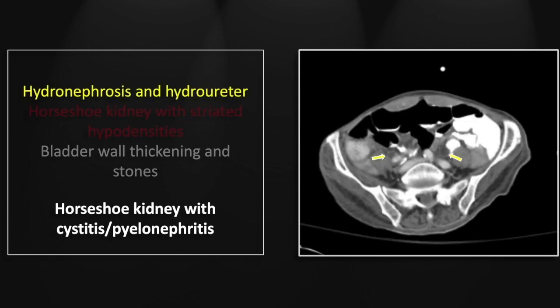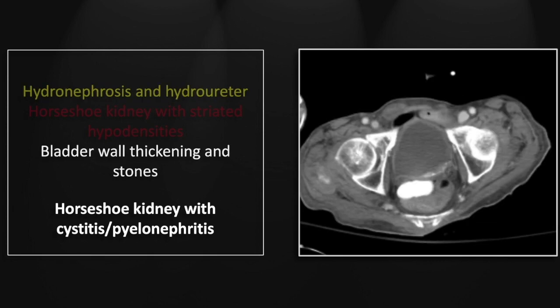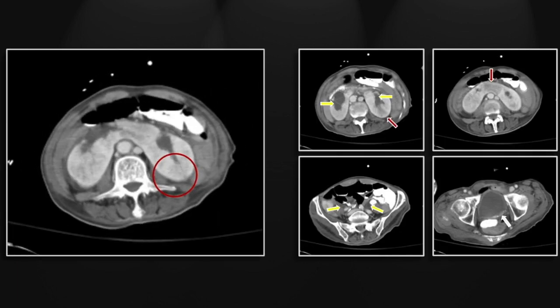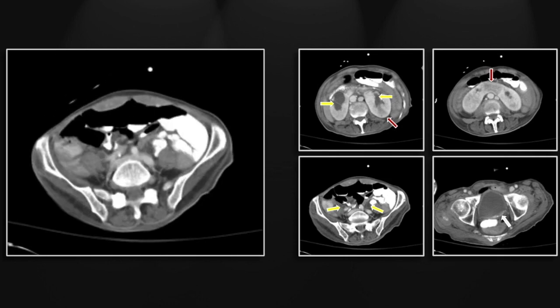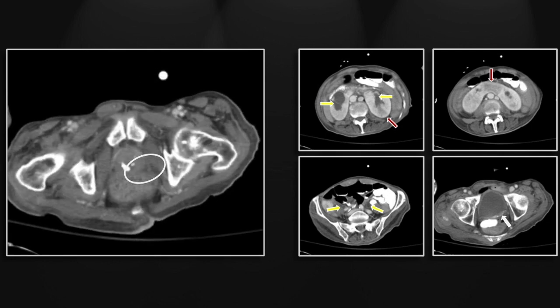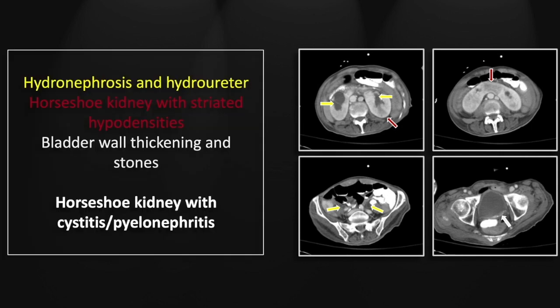In the pelvis we have bilateral hydroureter and the bladder demonstrates irregular wall thickening as well as layering tiny gravel-like stones. Of course with horseshoe kidney, patients are at risk for increased stone formation as well as pyelonephritis. There the pyelonephritis and in the bladder gravelly dependent stones. So that is a case of a horseshoe kidney with cystitis and multifocal pyelonephritis.